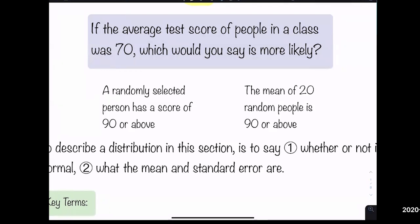Here's a question: if the average test score in a class was 70, which is more likely — that a randomly selected person has a score of 90 or above, or that the mean of 20 random people is 90 or above? Some students say the mean of 20 people is more likely; others say one individual person is more likely.